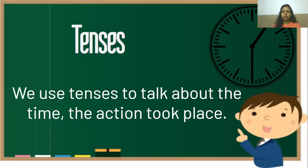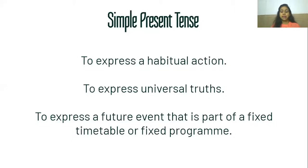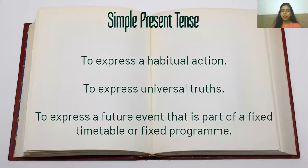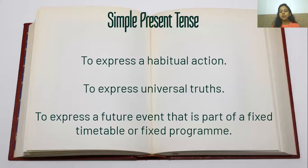We use tenses to talk about the time the action took place, and the present tense talks about the actions that are taking place in the present time. The first type we have is the simple present tense. It is used to express a habitual action, to express universal truths, and to express future events that are part of a fixed timetable or fixed program.